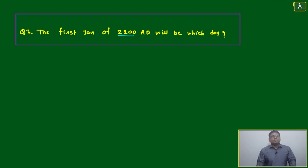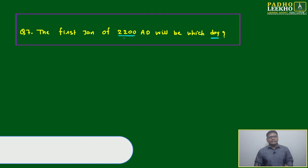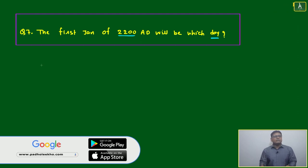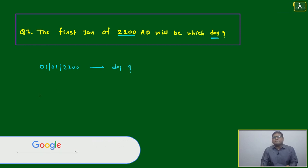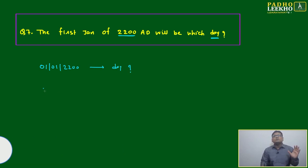The first January of 2280 will be which day? Plain calculation-based question. We have to calculate first January 2280. What will be the reference? If no reference is given, we have a universal reference. That is our assumption.